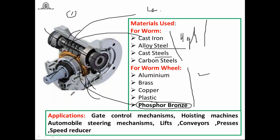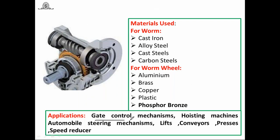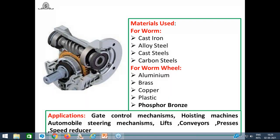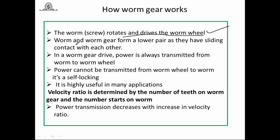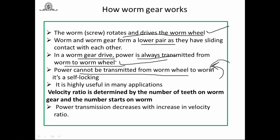Applications of worm and worm gear include gate control mechanisms in dams, hoisting machines, steering mechanisms, conveyors, and presses. Power is always transmitted from worm to worm wheel — it cannot be transmitted in reverse. Worm gear drives operate silently and smoothly. The self-locking property is important in many lifting and hoisting applications.